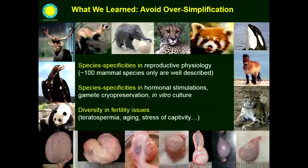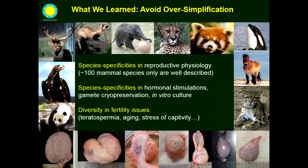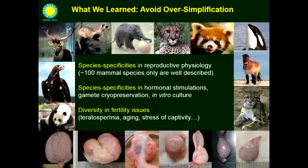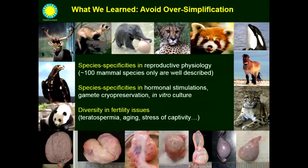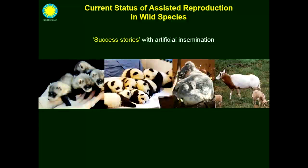Fertility issues really vary from one species to the other. You have some commonalities, but also unique issues like teratospermia in carnivores, aging issues in elephants, or stress of captivity in a lot of gazelles and deer species, all affecting reproduction.